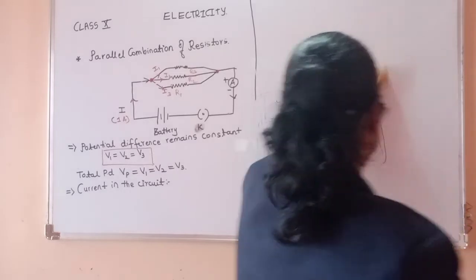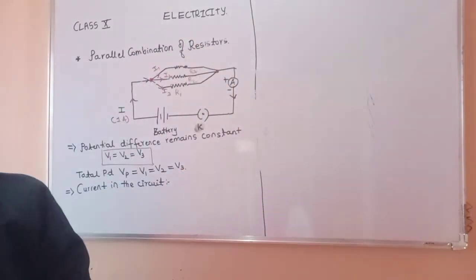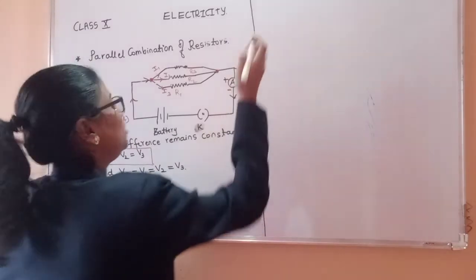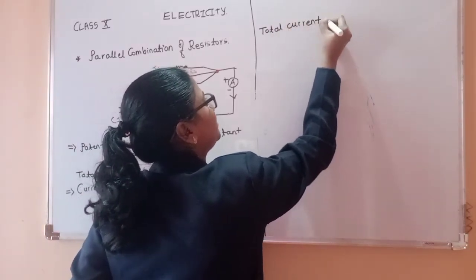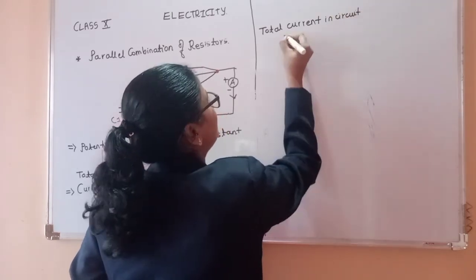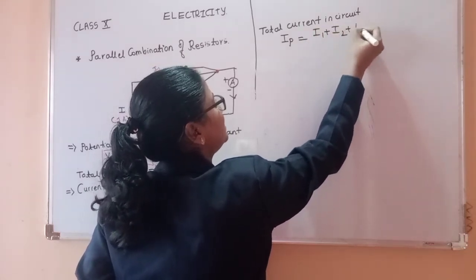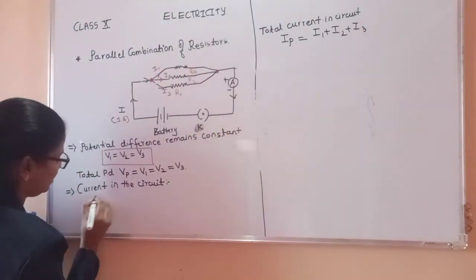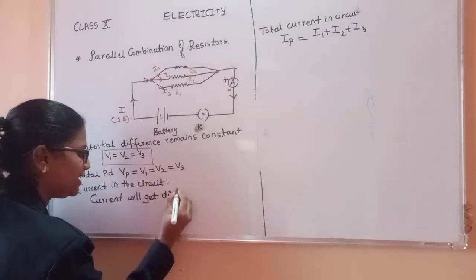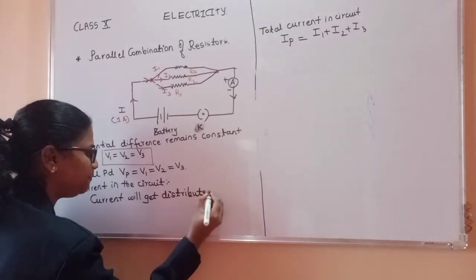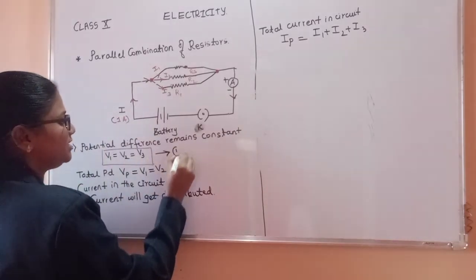So the total current in the circuit IP is equal to I1 plus I2 plus I3. We can say current gets distributed, while potential difference remains constant. This is equation 1, and this is equation 2.